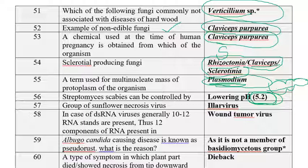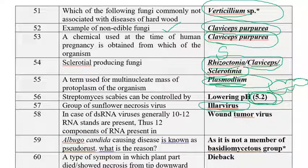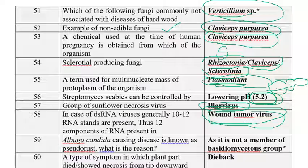The group of sunflower necrosis virus is Ilarvirus. In the case of double-stranded RNA viruses, generally 10 to 12 RNA strands are present. They are asking which virus has 12 RNA components — that is wound tumor virus, which has 12 components.